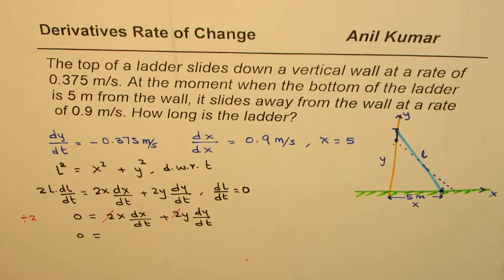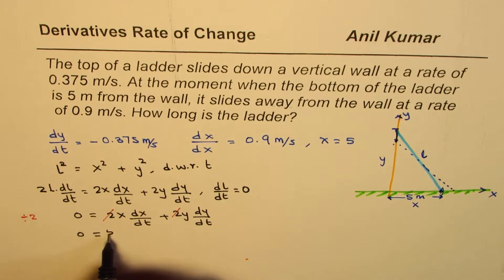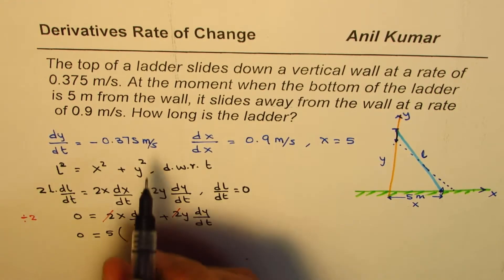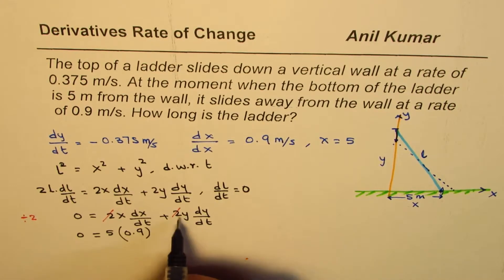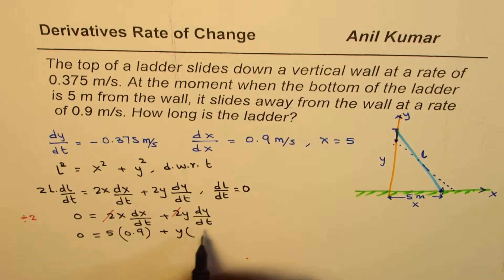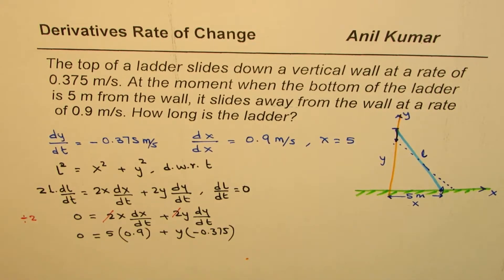So we do divide by 2 both sides. So here 0 divided by 2 will be 0. And let's substitute the values: x for us is 5, dx/dt is 0.9, y we need to find, and dy/dt is -0.375. Does that make sense to you? So we substituted these values.